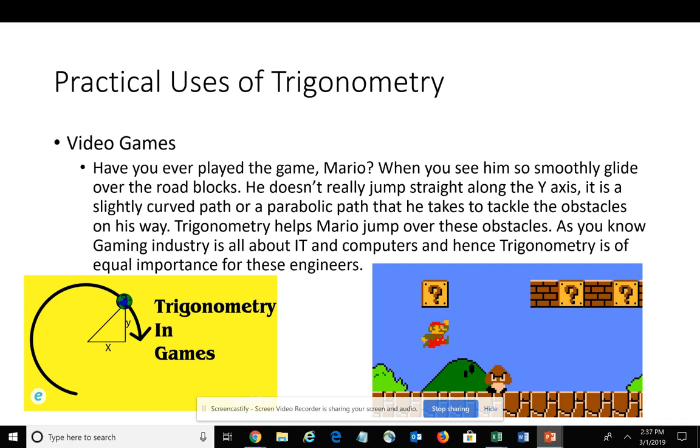In the game Mario Brothers, when you see Mario trying to glide over or jump over a roadblock, he's not really jumping straight up and then moving forward in an angle, but it's more of a slightly curved path. Trigonometry helps the programmer know how to make Mario move in order to successfully jump over that particular roadblock.